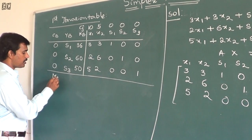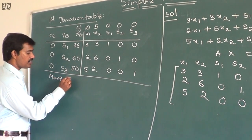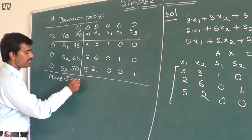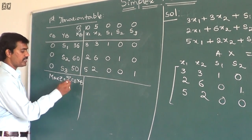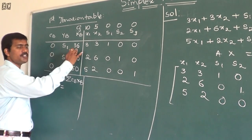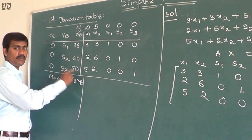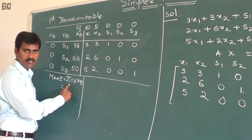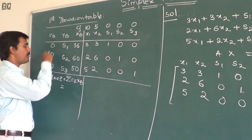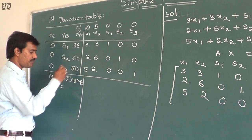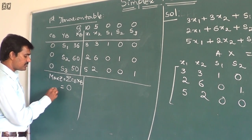Now we have three important steps. First, maximum of z: the formula is summation of cb times xb. That is 0×36 plus 0×60 plus 0×50, which equals 0. Next, we calculate zj using the formula zj equals summation of cb times xj.